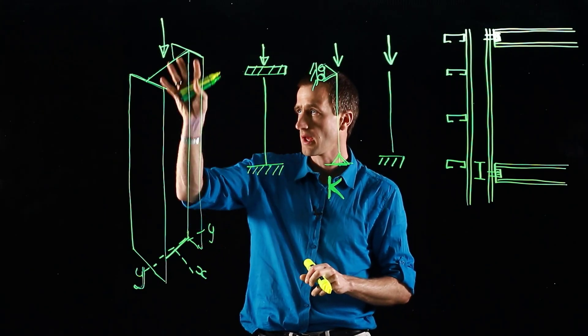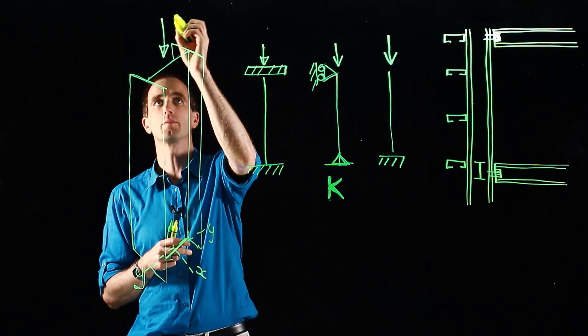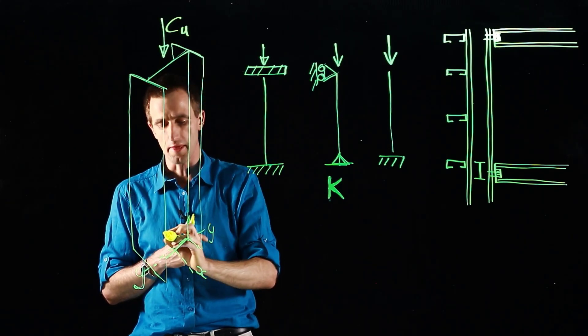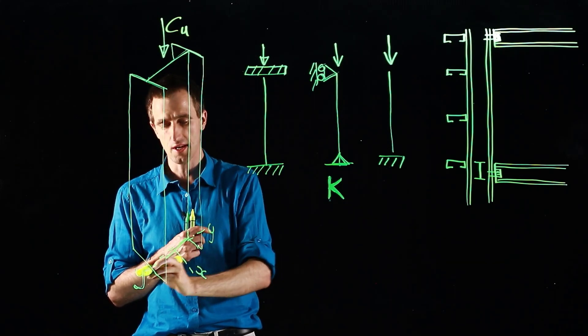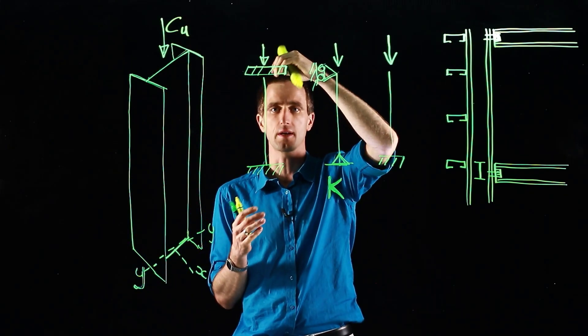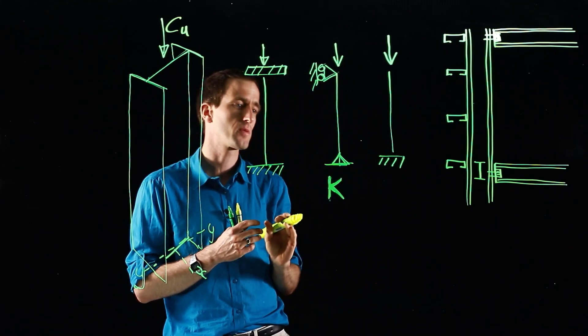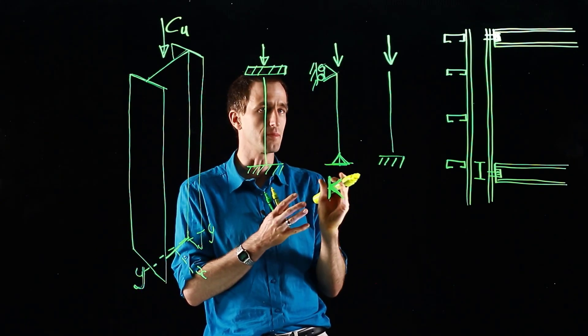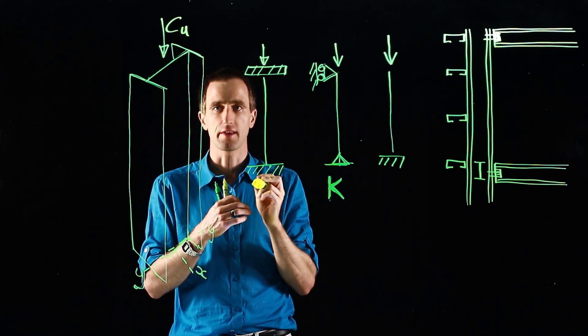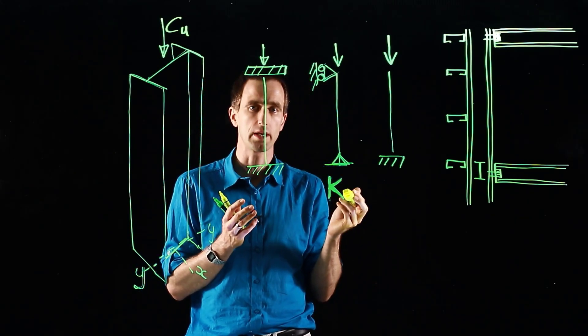Here I've drawn a view through a column with load placed on top, some compressive load CU, and then we've got our strong axis XX and our weak axis YY. We load this thing up until the point it becomes unstable and buckles. When it comes to effective length, as you've studied previously with Euler buckling...